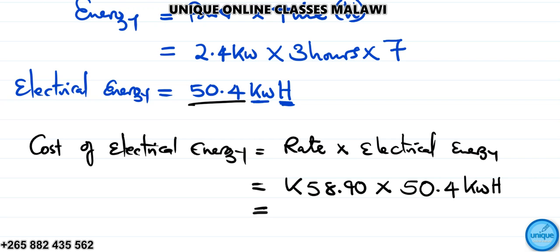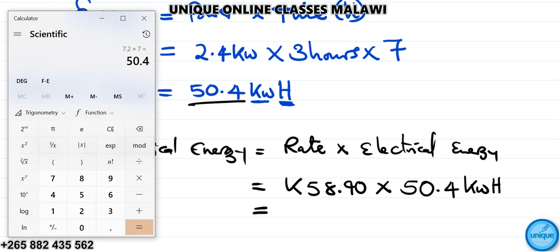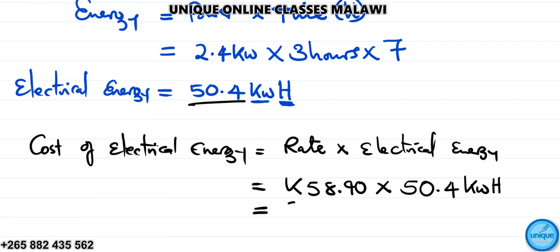So this will be K58.9 times 50.4, which equals K2,968.56. So we have K2,968.56 as the cost of running the fan and two bulbs for 3 hours per day in a week.